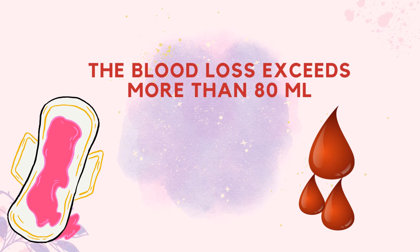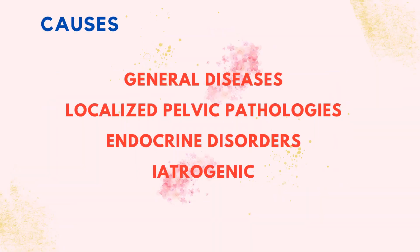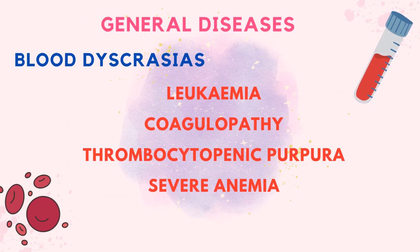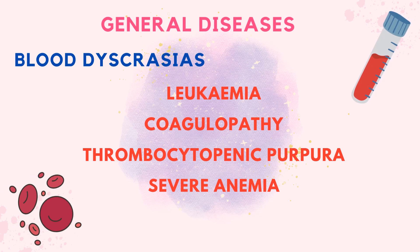The menstrual cycle is more or less unaltered, but the duration and quantity of menstrual blood are increased. The causes of menorrhagia are classified into general diseases, localized pelvic pathologies, endocrine disorders, and iatrogenic causes. Let us go through each of them in detail.